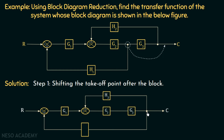From rule number 5 that we discussed in block diagram reduction, when we shift a takeoff point after a block, we need to divide the gain of the takeoff point branch by the gain of that block. The gain of this takeoff point branch is H1, so if we divide by G3, we will have H1 over G3.